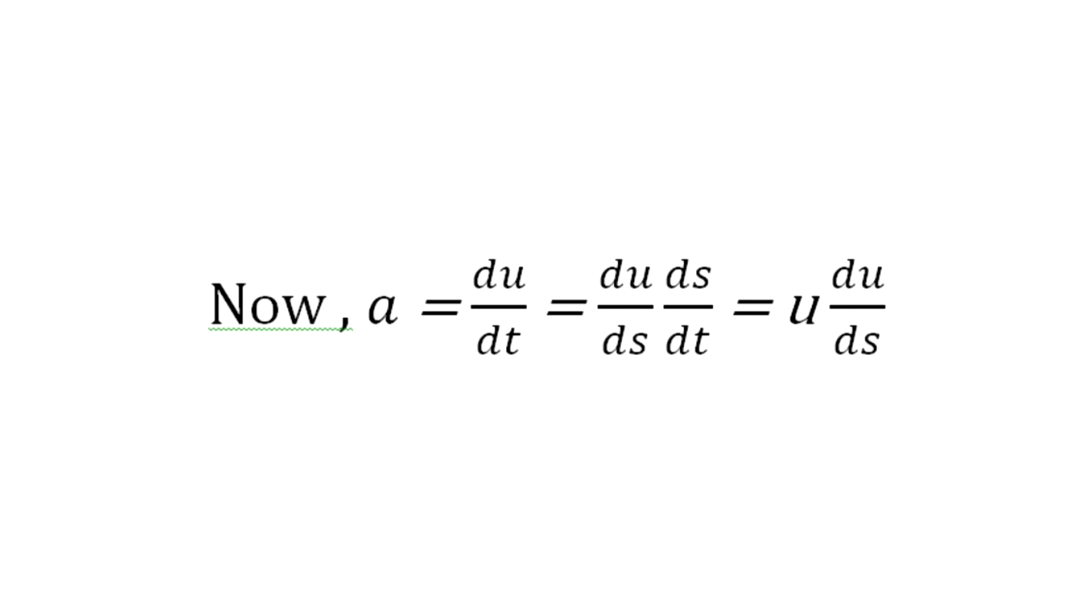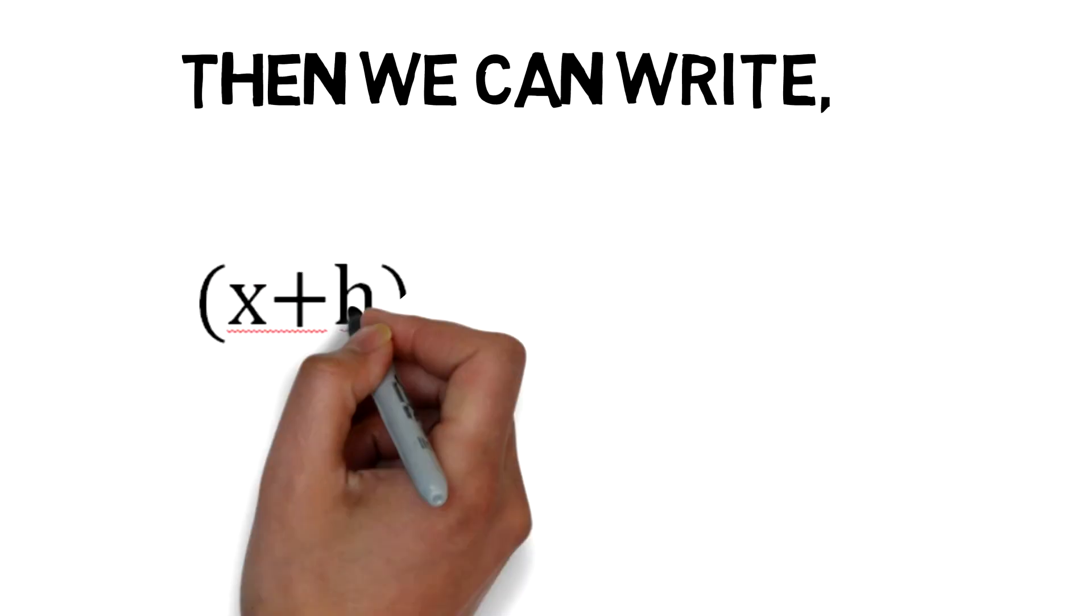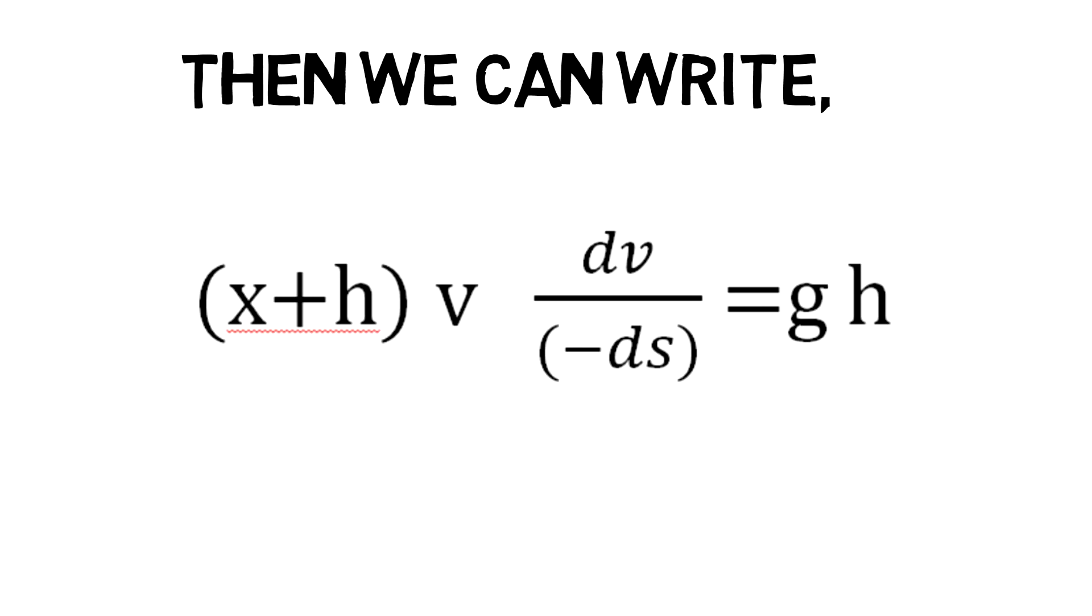Now ds/dt = u. So we can write a = u (du/ds).